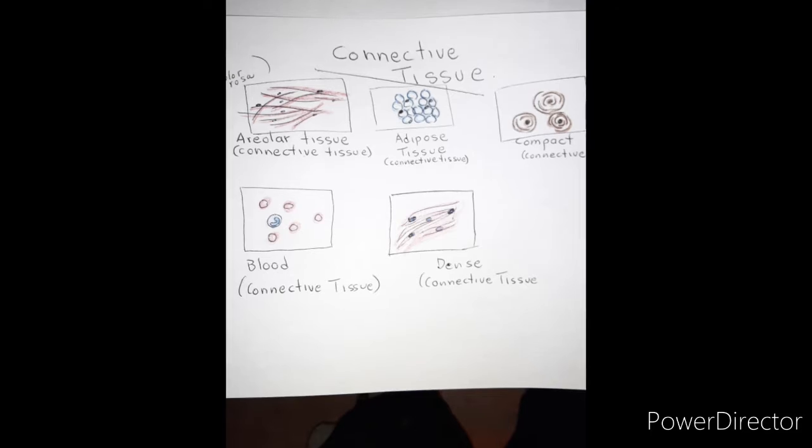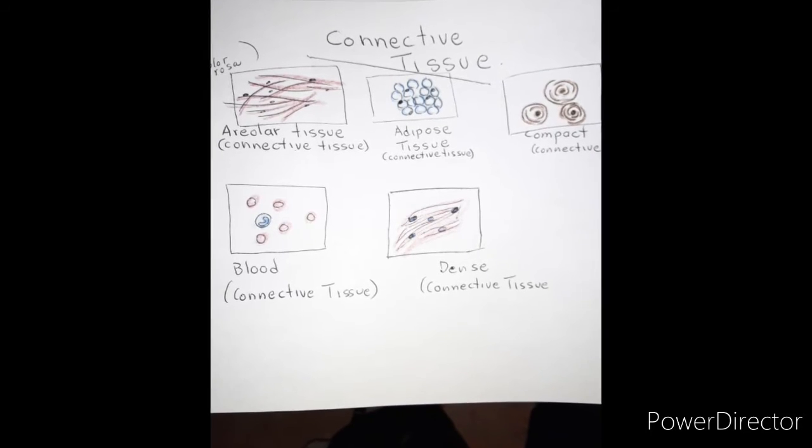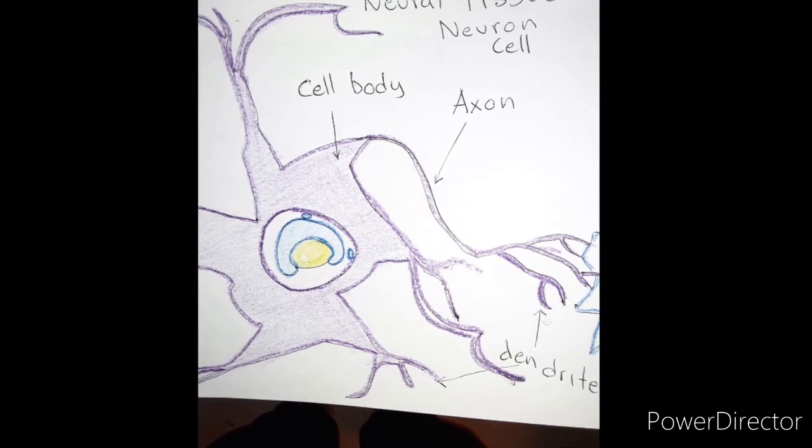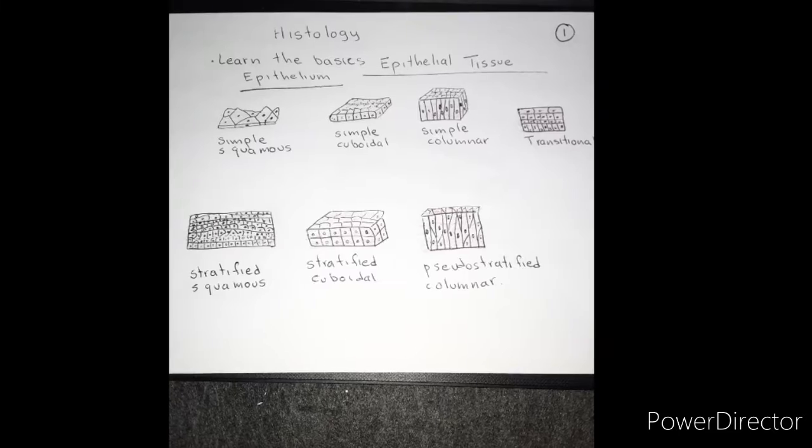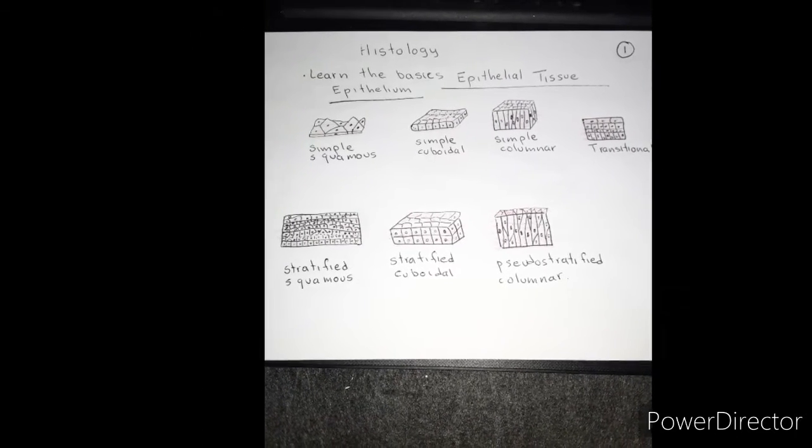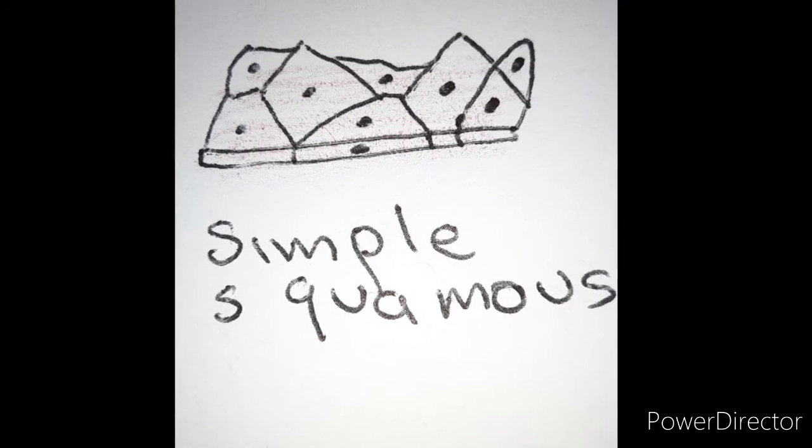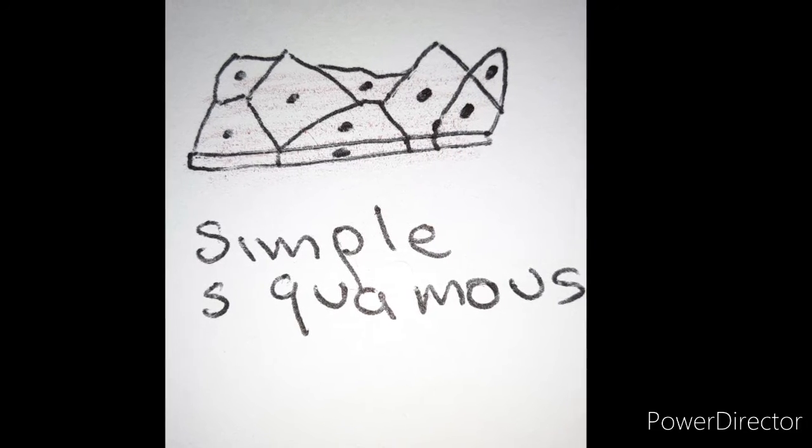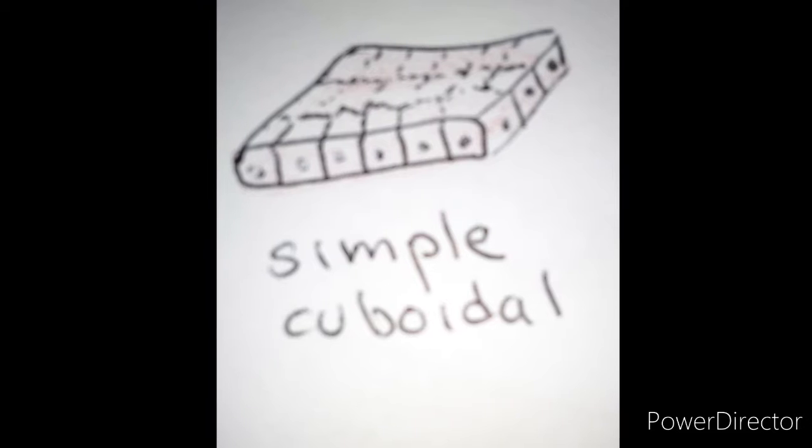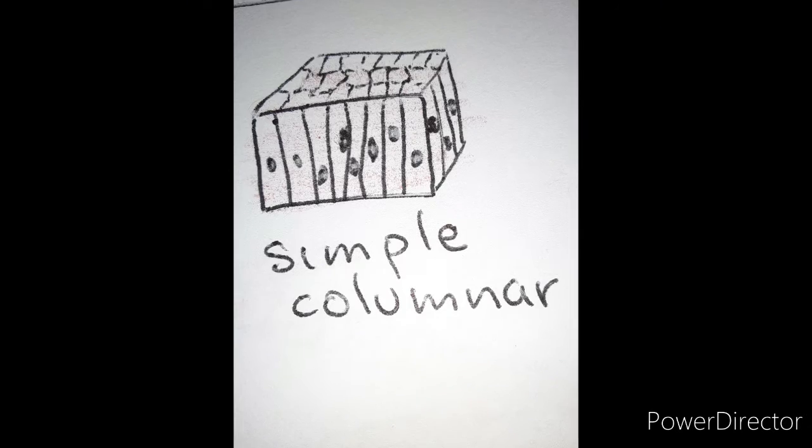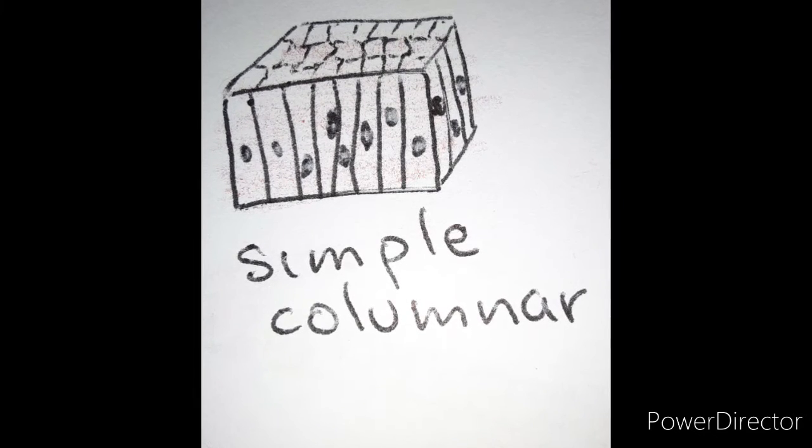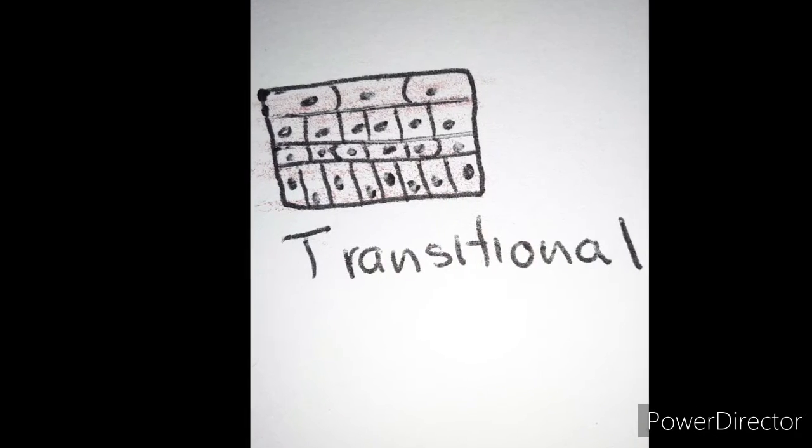This is the epithelial tissue, the muscle tissue, the connective tissue, and neural tissue. From the epithelium, we have the simple squamous tissue, simple cuboidal, simple columnar, transitional, transicional.